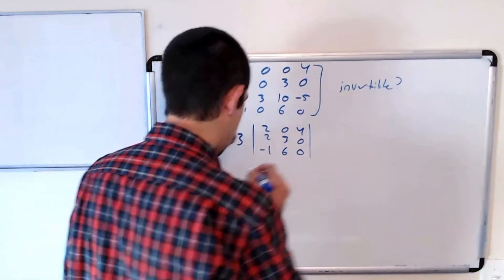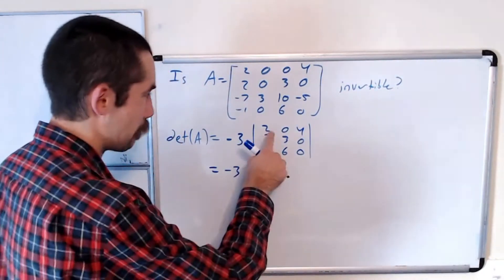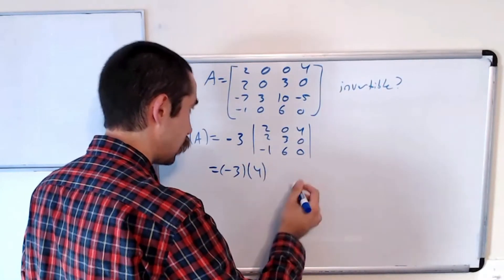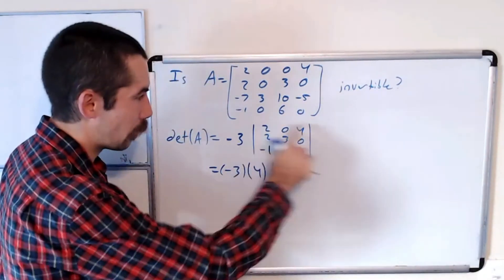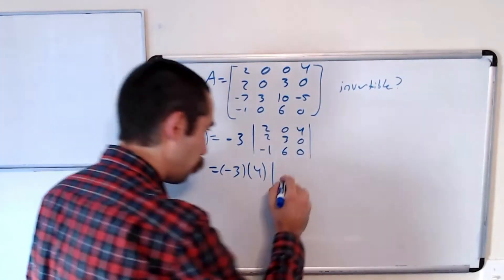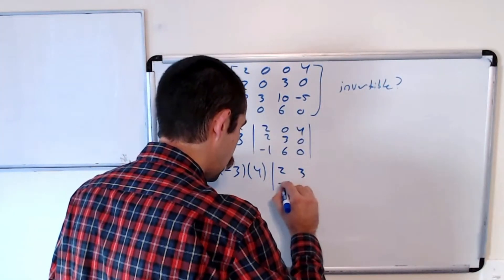And so this is equal to negative three times... okay, plus minus plus, positive four times the determinant of the two by two matrix you get by removing this first row and last column, which is two, three, negative one, six.